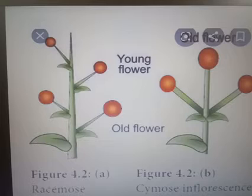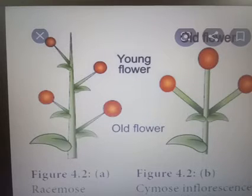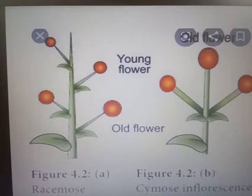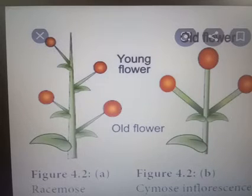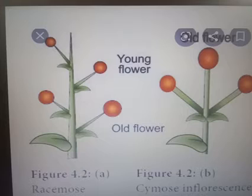Inflorescence is of two types: racemose inflorescence and cymose inflorescence. In racemose inflorescence, the axis grows continuously. The flowers show acropetal succession — older flowers are at the base and the younger flowers are seen at the top. Examples are Crotalaria and cassia.